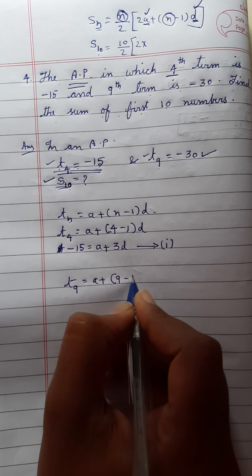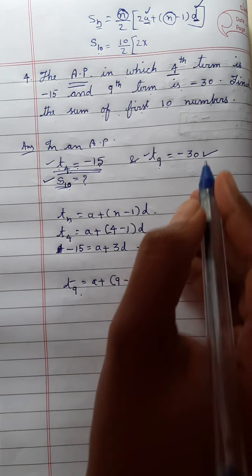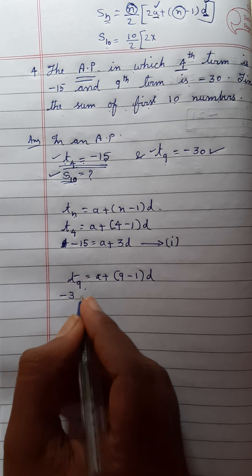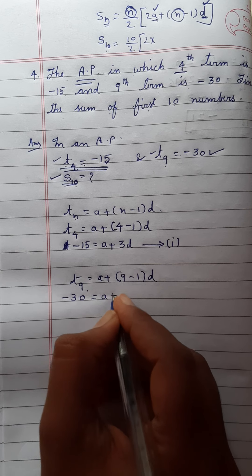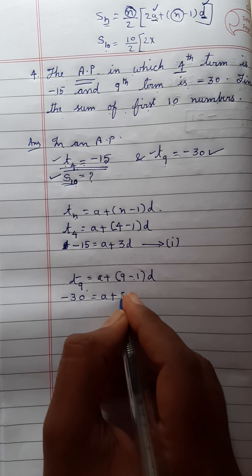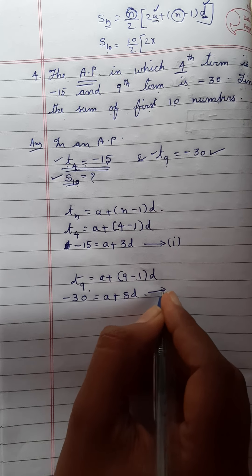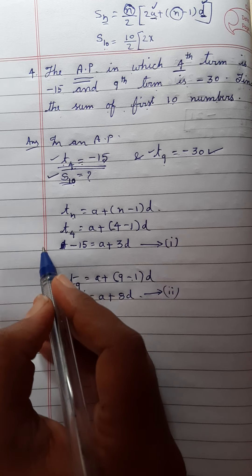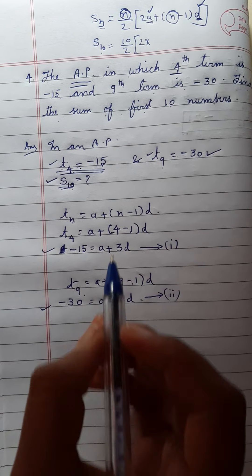For T9, we have T9 equal to a plus 9 minus 1 into d, that is a plus 8d. The value of T9 is negative 30, so negative 30 equals a plus 8d. Consider this as equation 2.